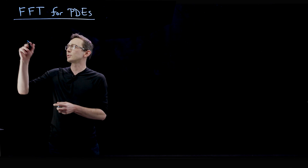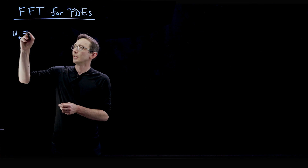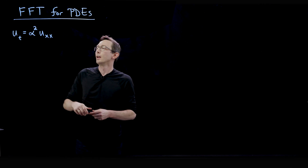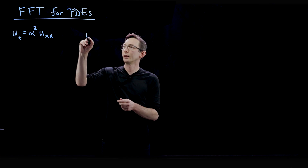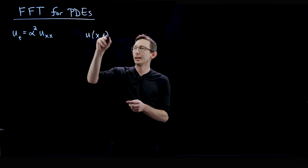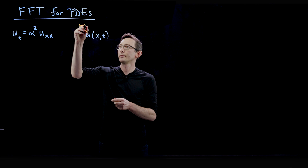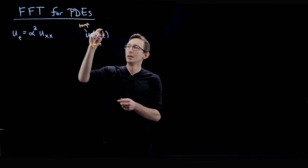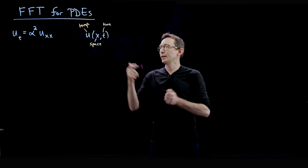We're going to start with the heat equation. The heat equation is u_t equals alpha squared u_xx. This is the one-dimensional heat equation where u is temperature, t is time, and x is space. So u is a function of x and t — temperature as a function of a spatial variable and time. What we're going to do is Fourier transform this.